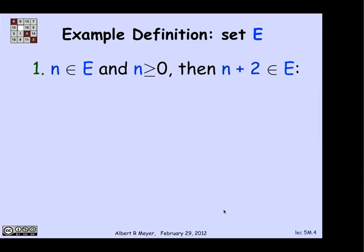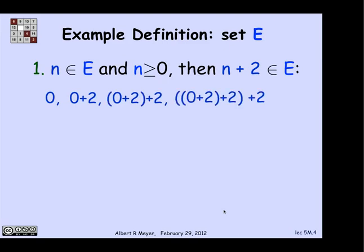Let's just use the first constructor rule and use it repeatedly. I can start off with 0. That's the base case. And then I can apply the constructor to add 2 to it. Then I can apply the constructor again to add 2 to 0 plus 2. And then I can apply it a third time to add 2 to 0 plus 2 plus 2. And it's clear what I'm getting is 0, 2, 4, 6, and so on. And I'm going to get all of the non-negative even numbers in that way.